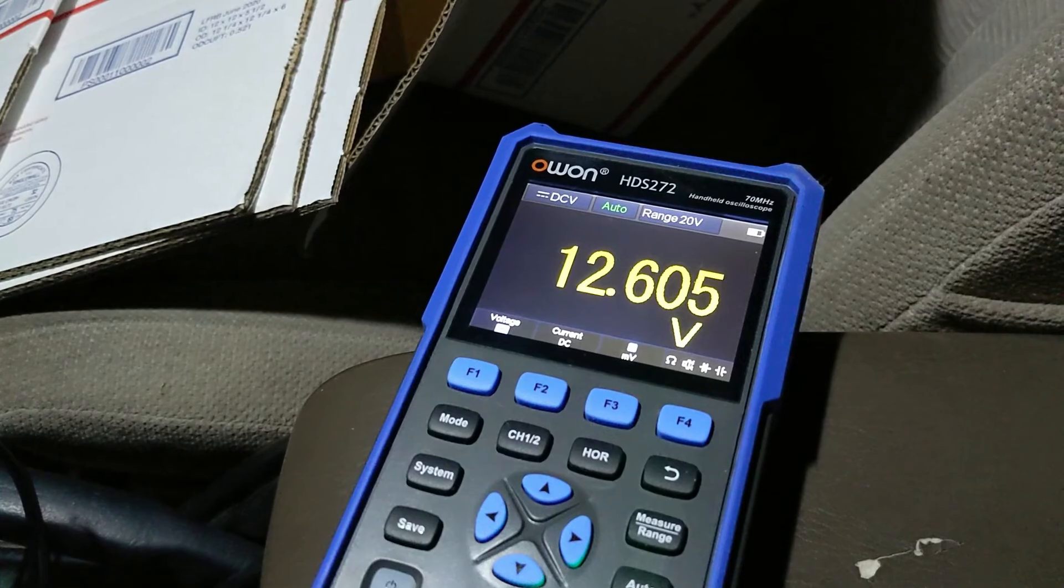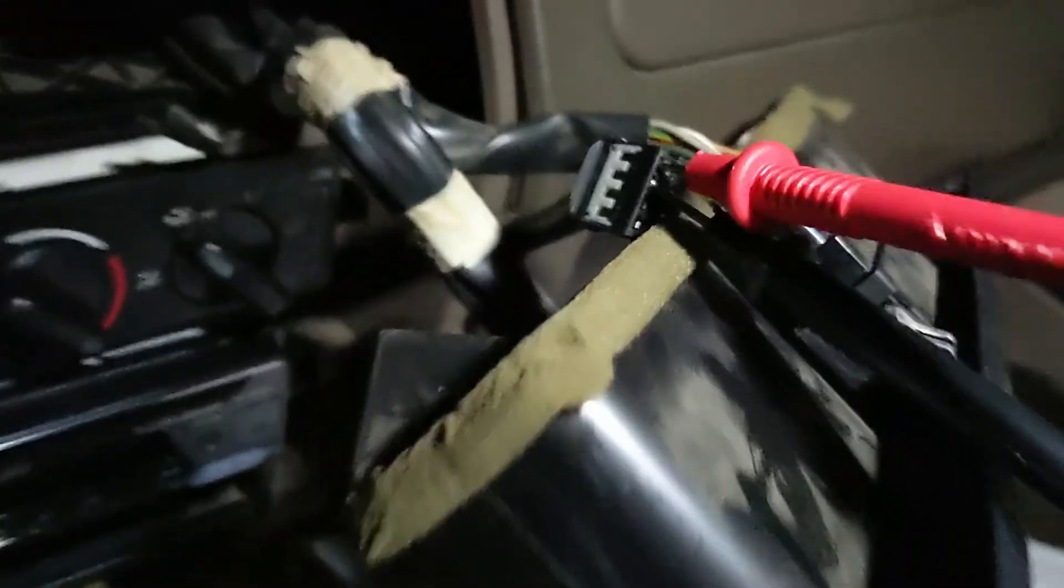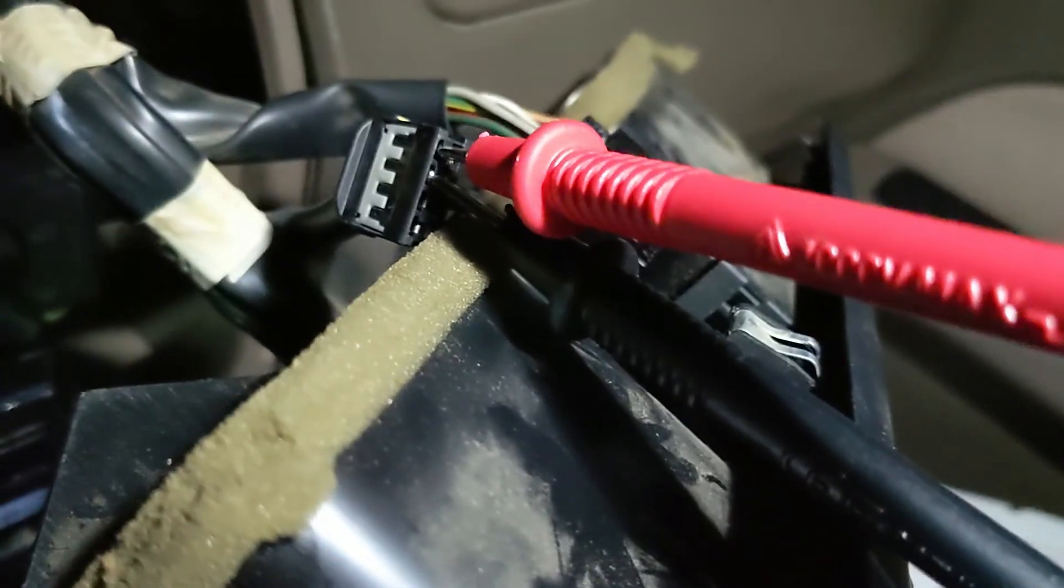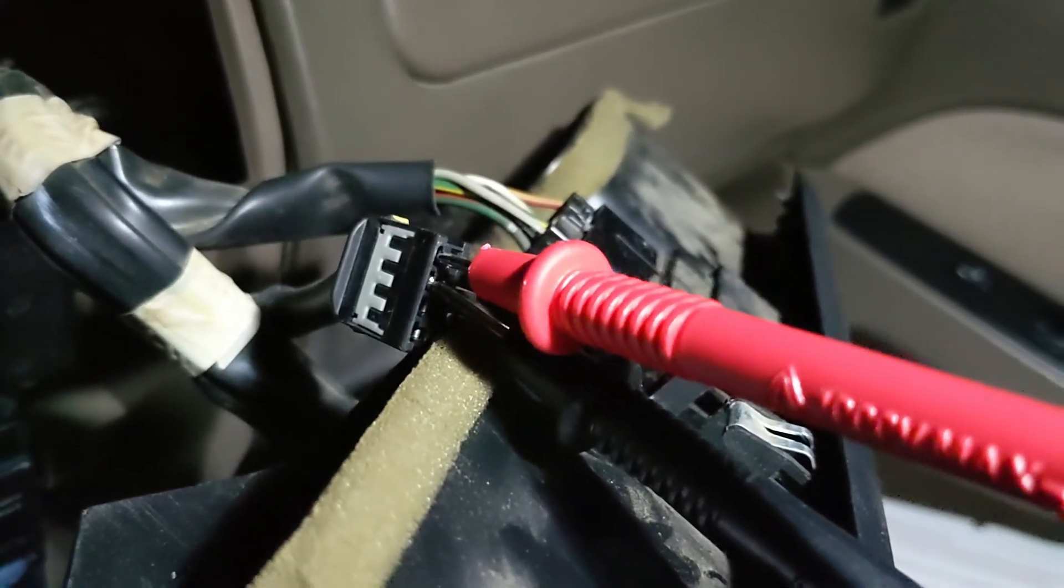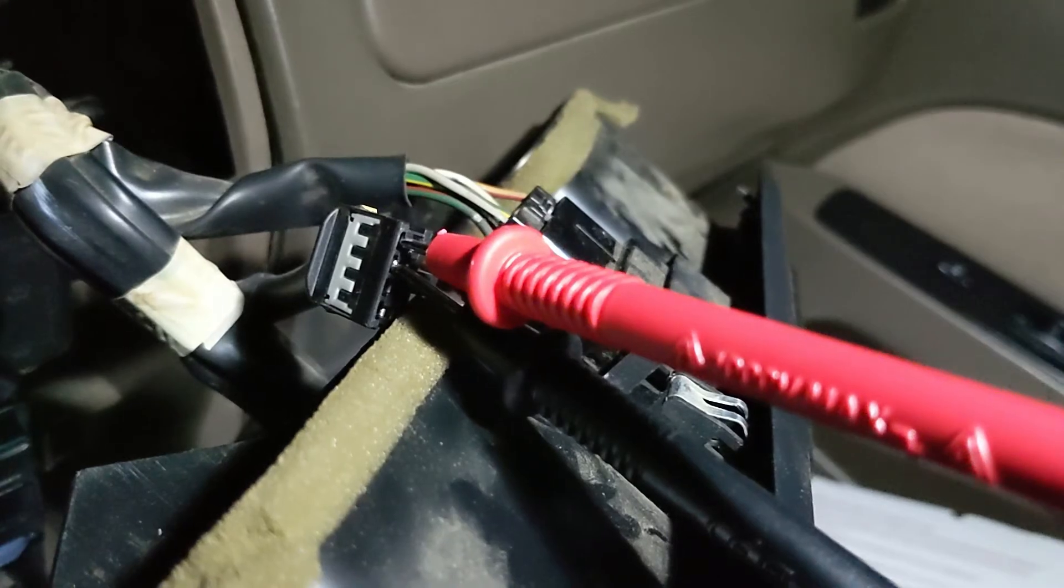All right, and on our multimeter, as you can see, we have a 12 volt reading. And basically, I have the black in the negative, or the grounding pin, and I have the red in the B positive pin. So that's the constant 12 volts to the clock that keeps the memory alive.